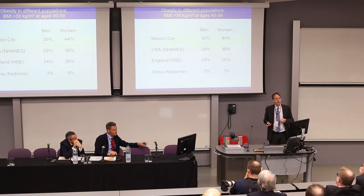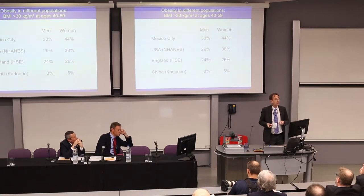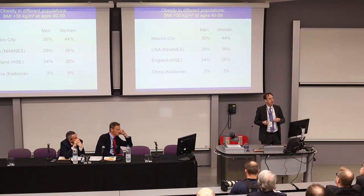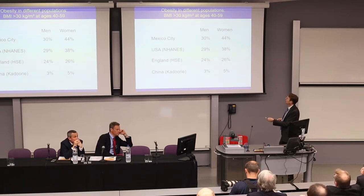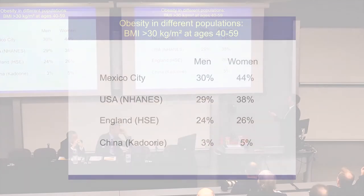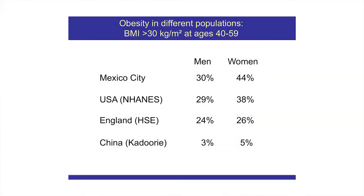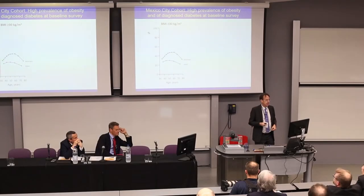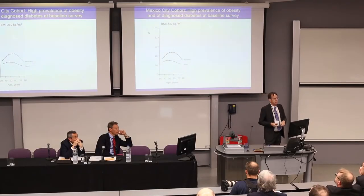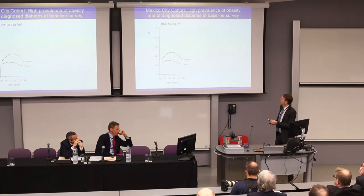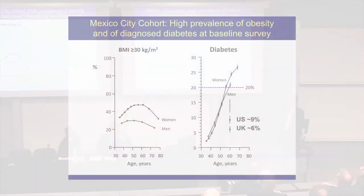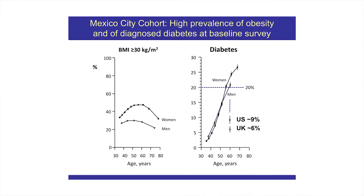If we want to look at leanness, we need to look at different populations. If we want to find out where we should be in terms of BMI, we go to rural China. If we want to see where we're going to go, we can go to Mexico City. In this study done with the Mexican Ministry of Health, around 40% or more of women in middle age have a BMI over 30.